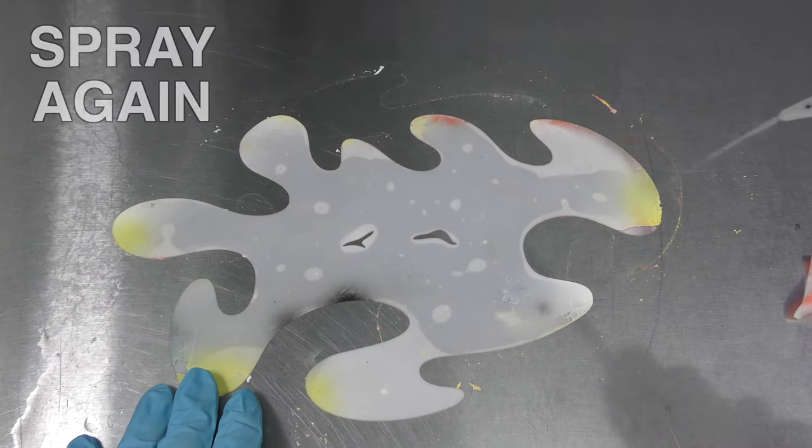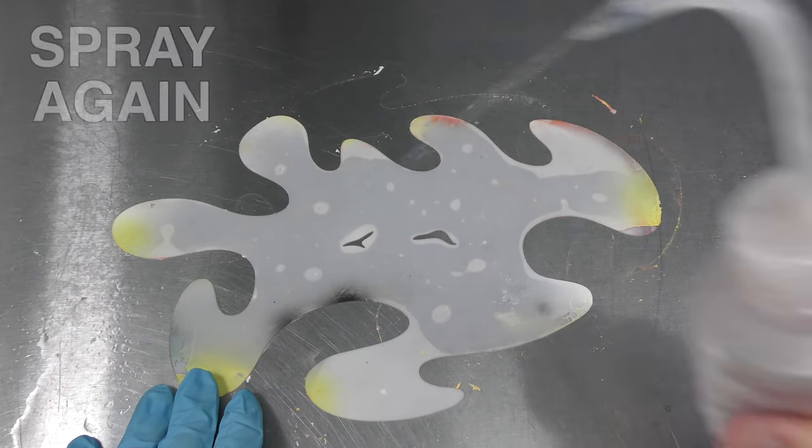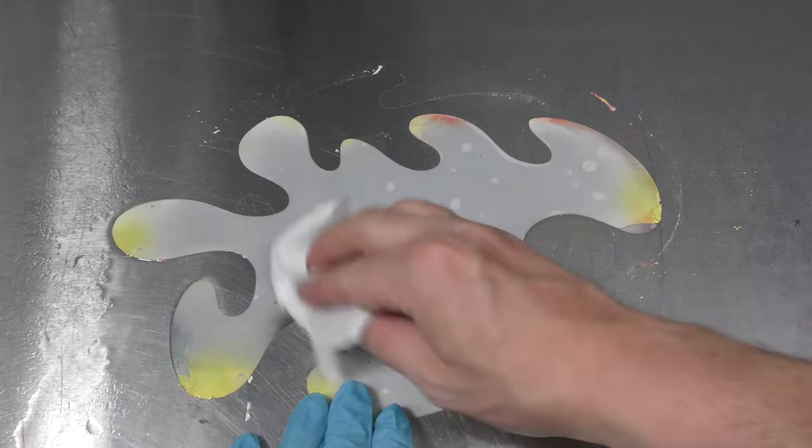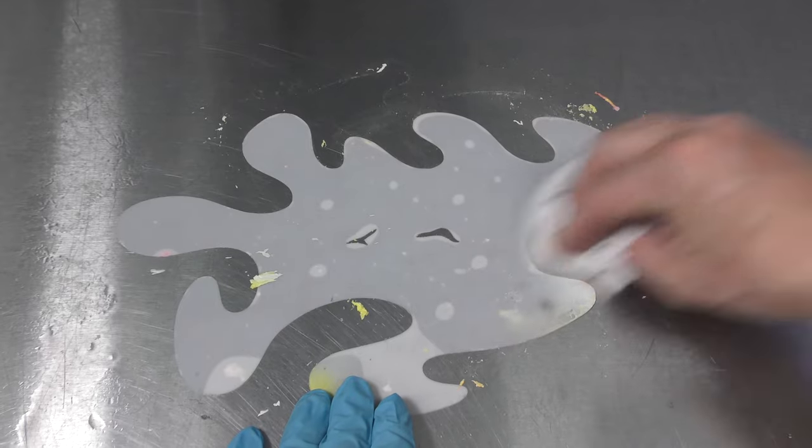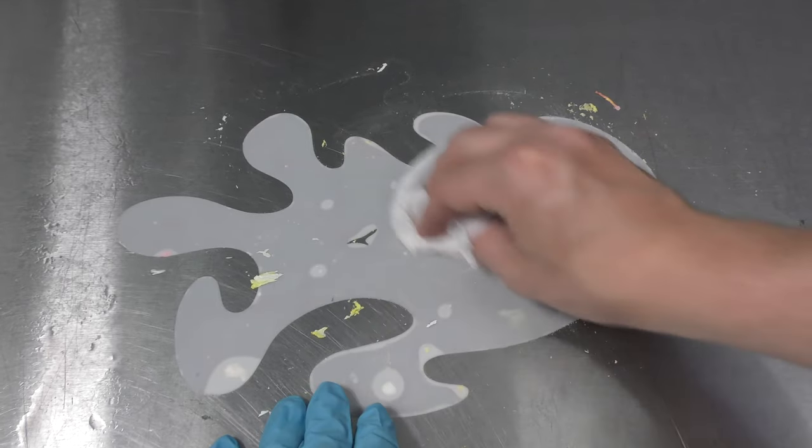Spin it around the other way. And give the other side a bit of a spray. Again, very easy to remove. Paint that's been sitting on there for a while. I've had this paint on there for at least a couple of months.